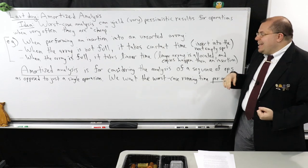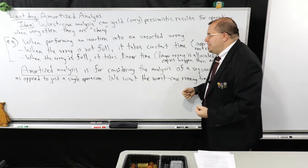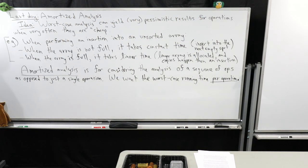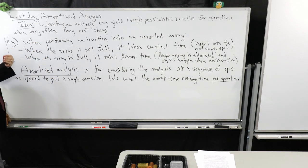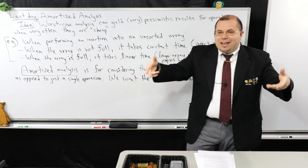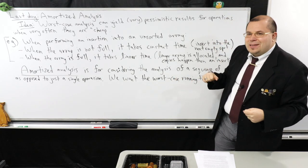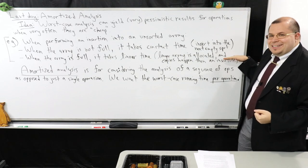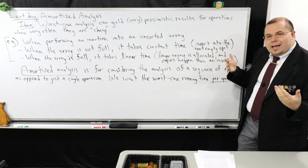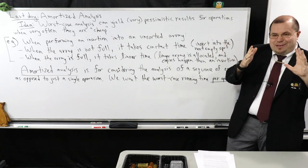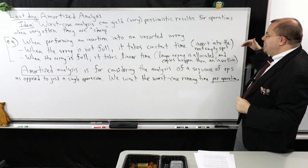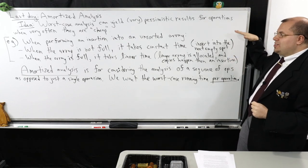When the array is not full it takes constant time — a cheap operation. However, when the array is full you end up with linear time: O(n) overall. This is because you have to create a bigger array, copy all the elements from the old array into the new one, and then do the insertion. This is an expensive operation, but notice that in this example it doesn't happen very often.